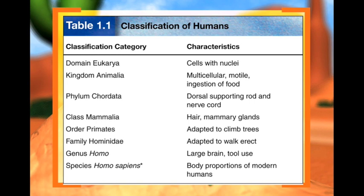If we wanted to talk about the classification of humans, we start with domain Eukarya, because we are eukaryotes with cells that have nuclei. We belong to kingdom Animalia, phylum Chordata because we have a spinal cord, class Mammalia, order Primates, family Hominidae, genus Homo, species Homo sapiens. We are the only organisms in that category.